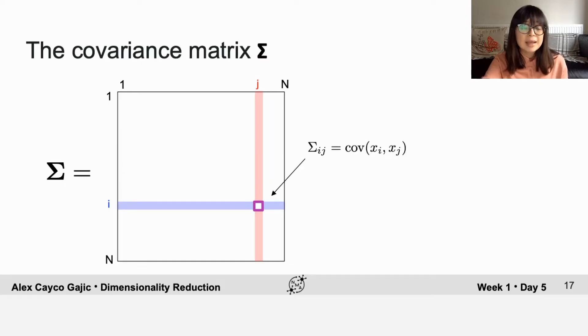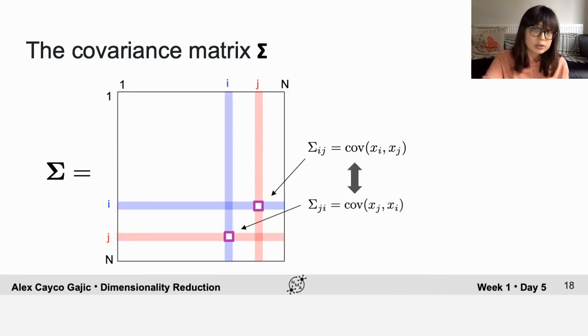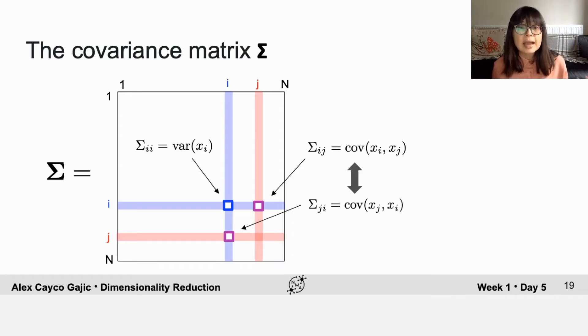This is an n by n matrix whose ijth element is the covariance of xi and xj. That means that the jith element is also the covariance of xi and xj. So the covariance matrix is symmetric across its diagonal. And if you look along the diagonal, then the iith element is given by the variance.